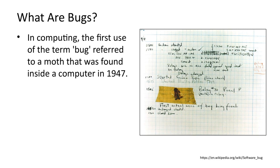The image shows a page from a log book from 1947. It shows a dead moth that was removed from a computing device, having been the cause of a malfunction. The device was a Harvard Mark II electromechanical computer. It weighed 23 tons and was incredibly slow.